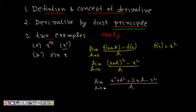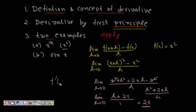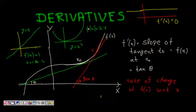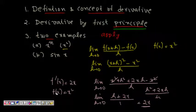Expanding (x+h)² gives x² + 2xh + h². The x² terms cancel, leaving lim[h→0] [2xh + h²] / h. Cancelling h from numerator and denominator gives lim[h→0] (2x + h). As h → 0, this becomes 2x. So f'(x) = 2x, confirming our earlier statement where f(x) = x².